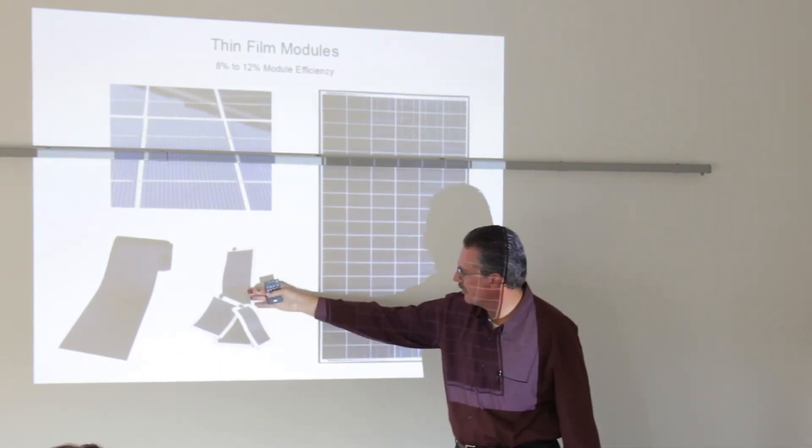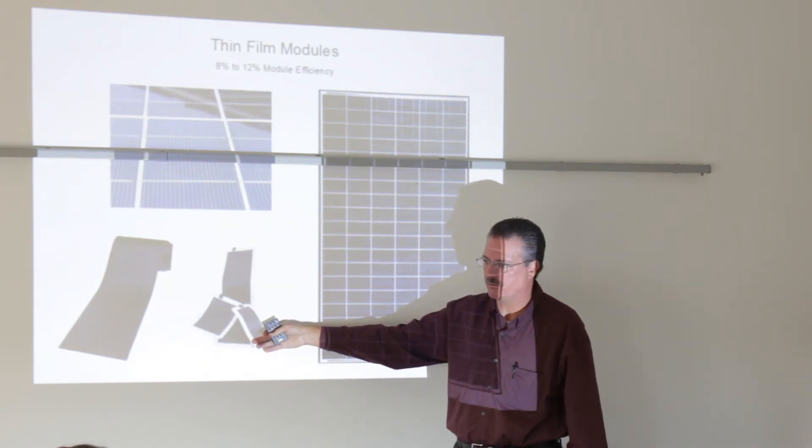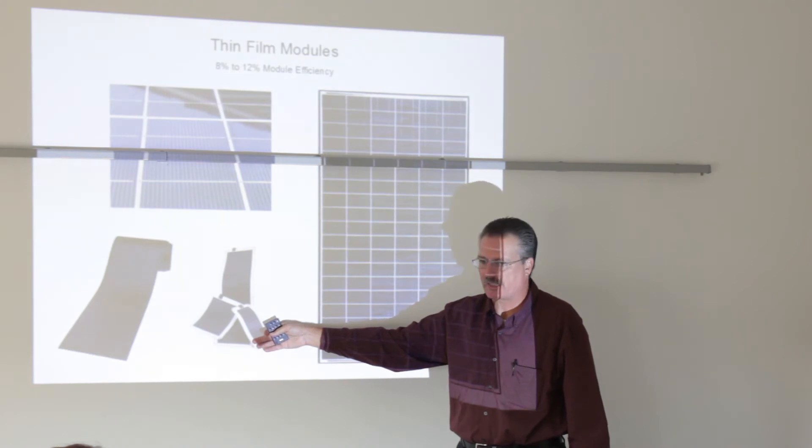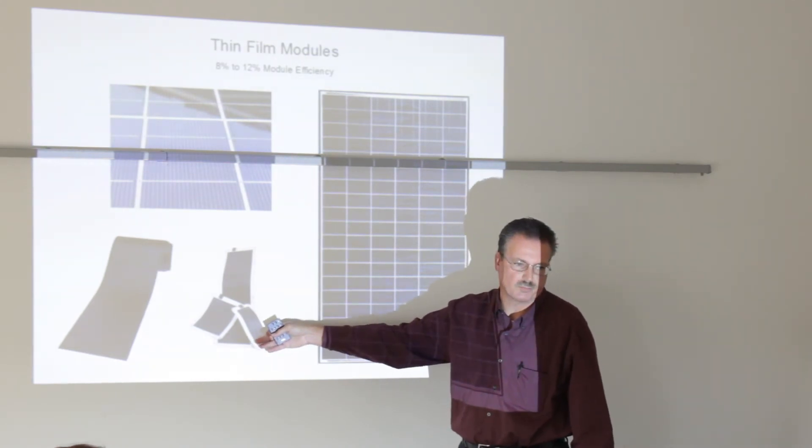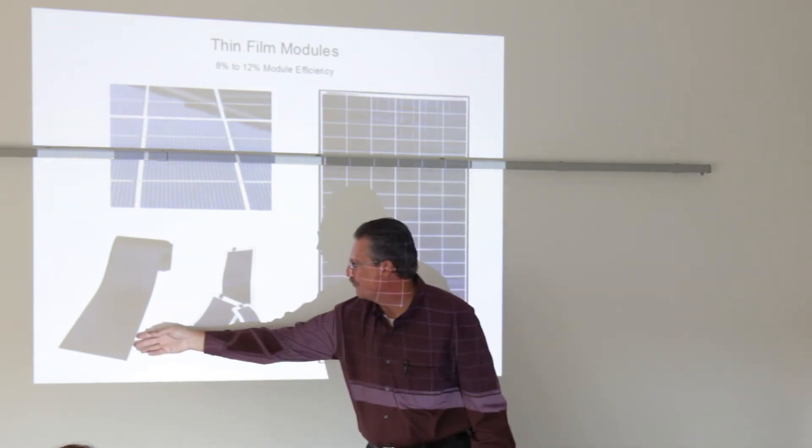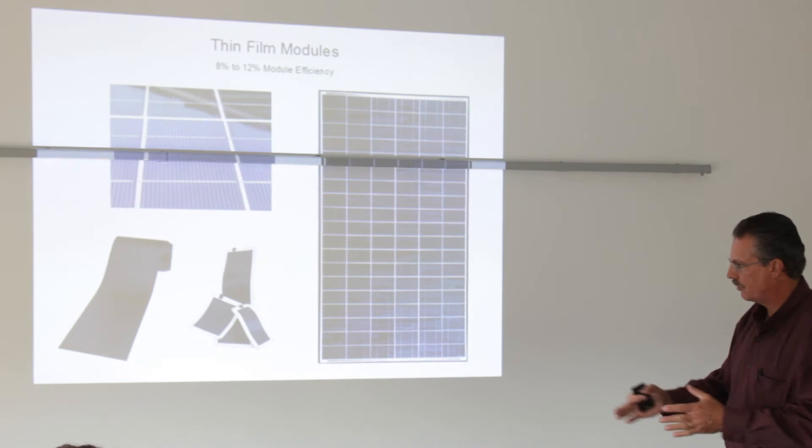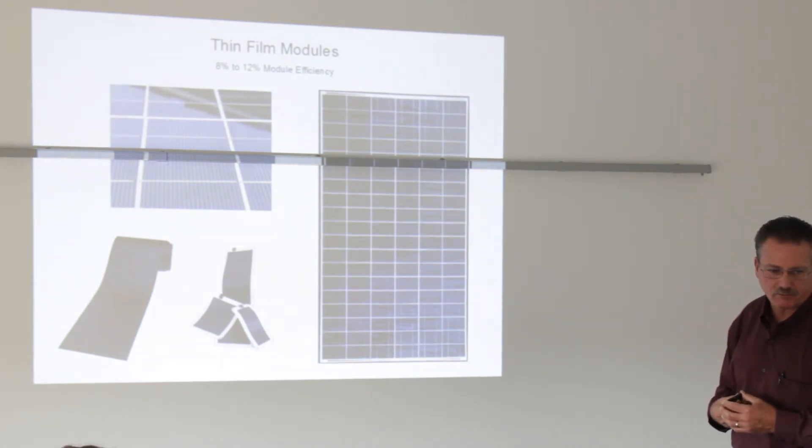But you see these now starting to show up on backpacks and things of that nature. And there's even talk now where you can get a jacket that has a module built into the back of it. You can plug your iPod in. And of course here are rolled cells that are good for sheet metal roofs and things like that, standing seam roofs. So those work real well for that. Although with the code, the way they're changing the code, it's always a work in progress.